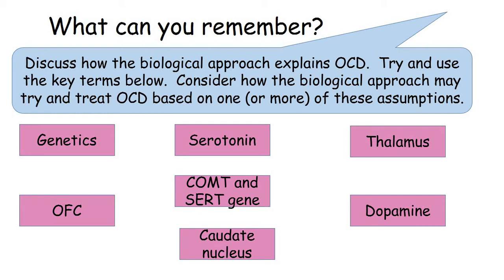Dopamine — we talk about the reward pathway. High levels of dopamine are often found in those with OCD, and that links to the reward pathway of that OCD cycle we looked at last week. If we carry out those behaviours — the compulsions — to deal with the obsessions, those compulsions will be even more rewarding in lowering anxiety if there are higher dopamine levels. And so that reinforces the behaviour. So we need to look at drug treatments to alter these levels of neurotransmitters and try to get them to a normal level.